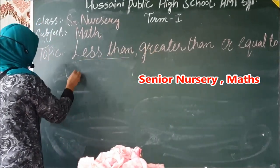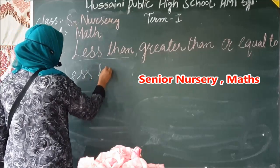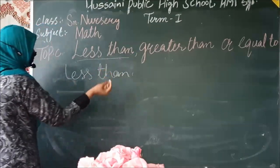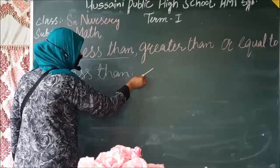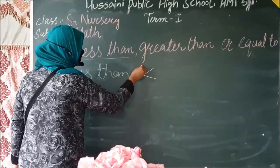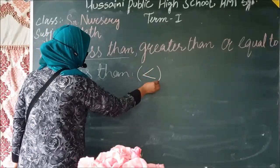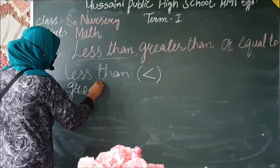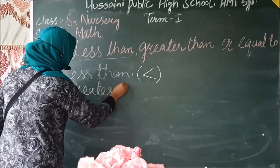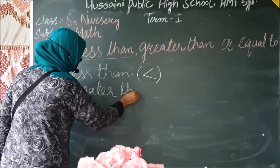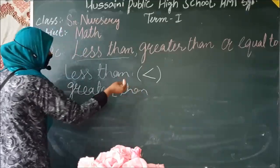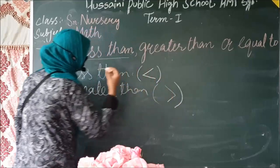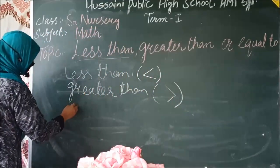Less than किसको हम बोलते हैं — less than बोलते हैं जब कोई number या कोई चीज दूसरी चीज से कम होती है, और इसकी symbol होती है ऐसी। Greater than बोलते हैं जो दूसरी चीज या number से बड़ा हो, और greater than की symbol है ये।